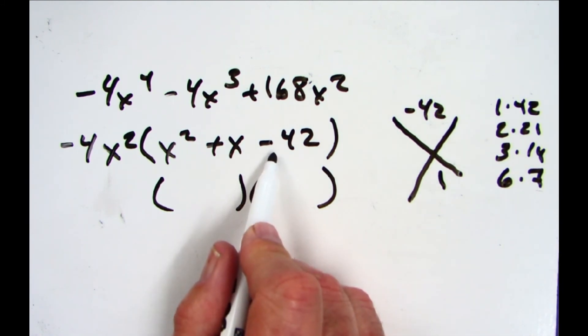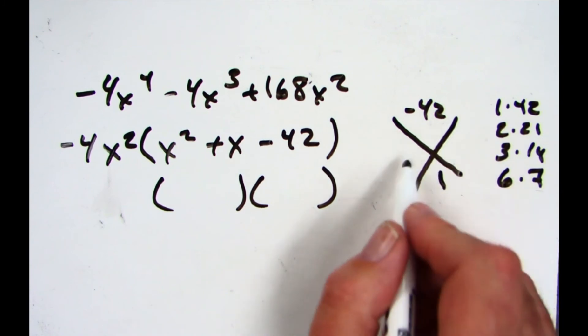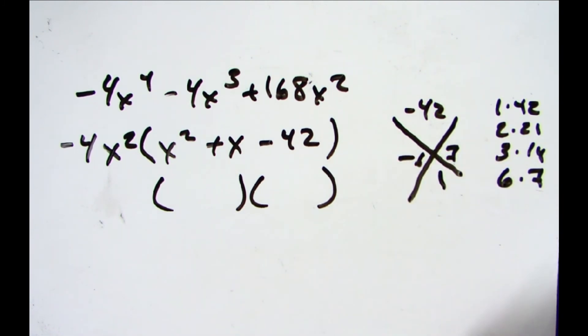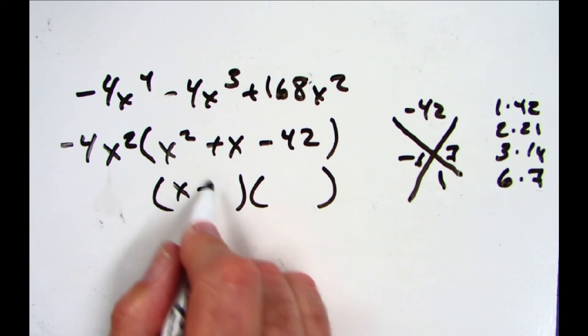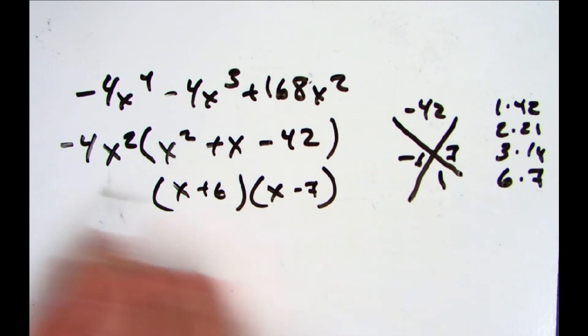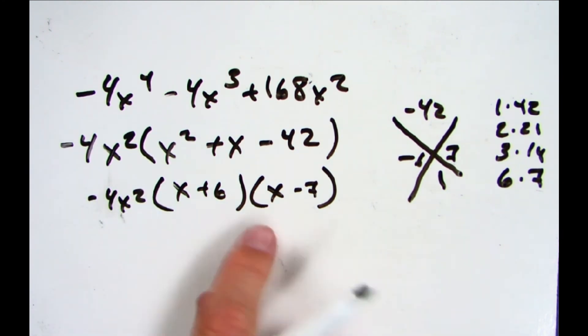So they multiply to -42 and add up to positive 1. That'd be -6 and positive 7. So here we go: (x + 6)(x - 7), and then that -4x² has to come along for the ride, and we can't factor anymore. We have our answer. Pretty crazy.